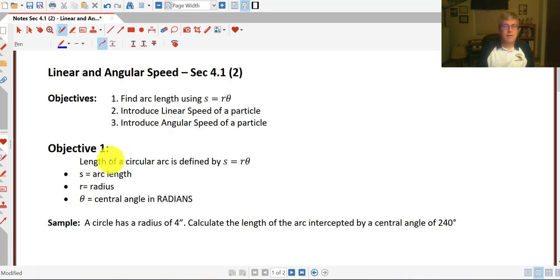So our first objective: the length of a circular arc is defined by s equals r times theta. Recall that an arc is simply the portion of a circle. We're finding the portion of a circle's circumference here to find out what that is. So if we want to find out the length of the arc, we would call that length s.